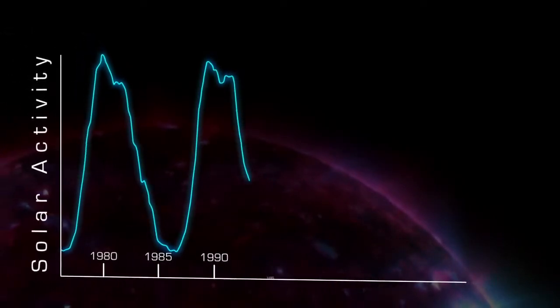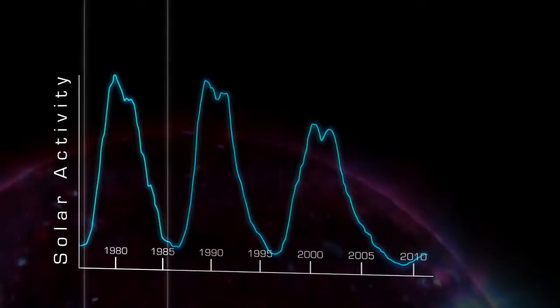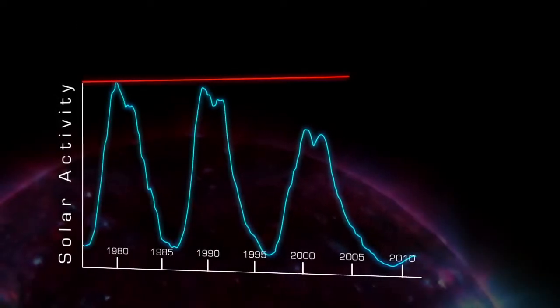This pattern is called the sunspot cycle, and a single cycle lasts for about 11 years, although it can be as short as 8 or as long as 14, and it can vary dramatically in intensity.